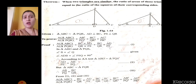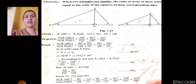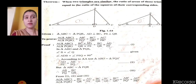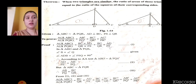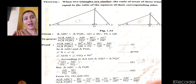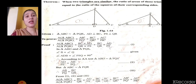It is the theorem of area of similar triangles, and we will be learning problems at 1.4. Let me see what the theorem states. The theorem states that when two triangles are similar, the ratio of area of those triangles is equal to the ratio of the squares of their corresponding sides.